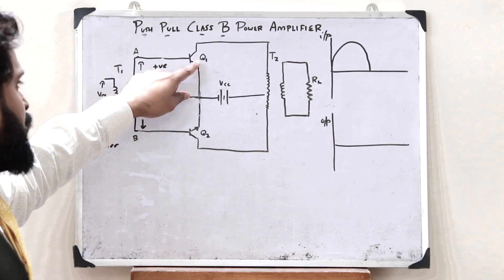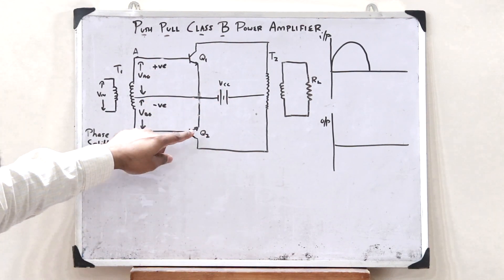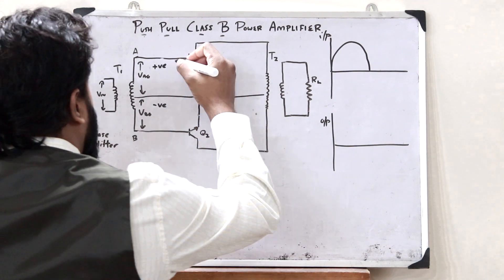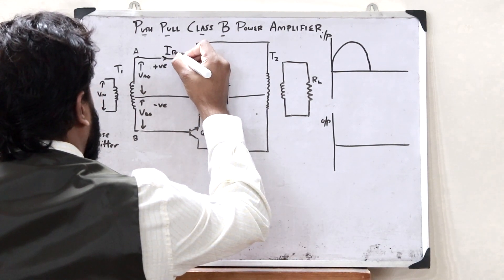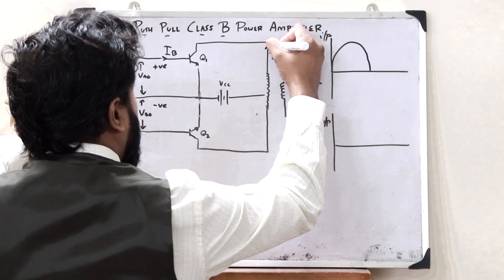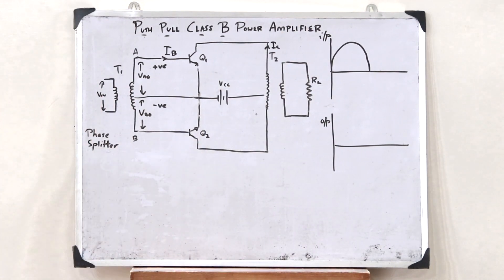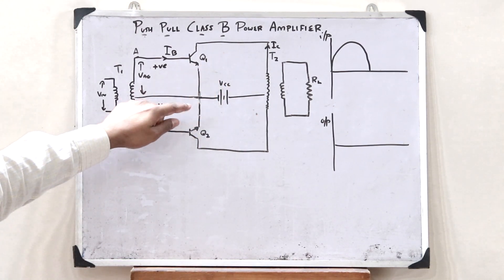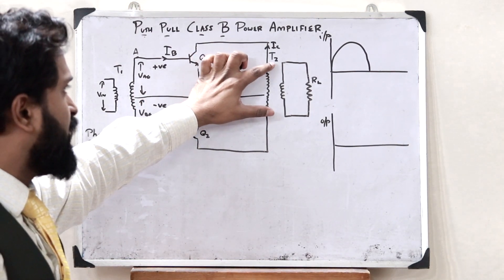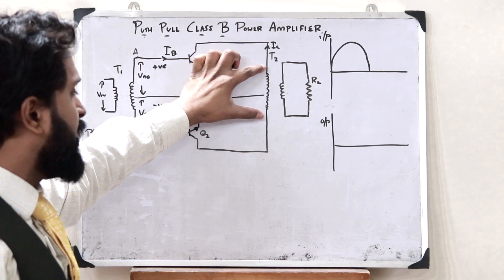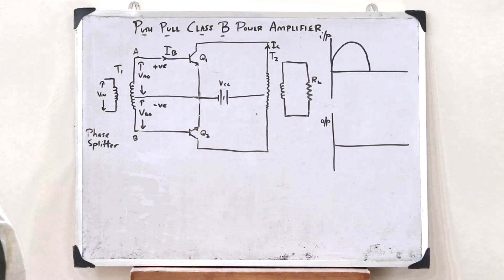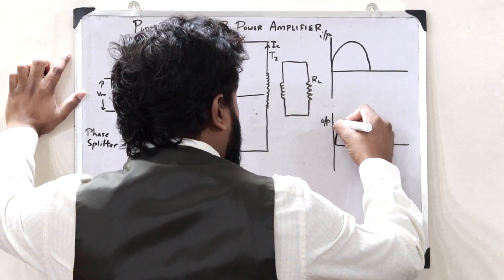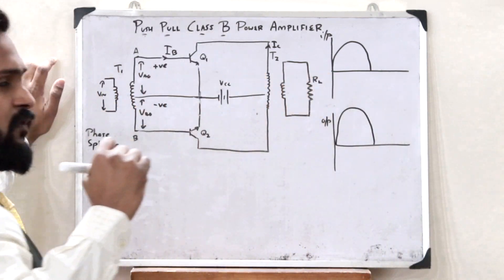Since Q1 is forward biased, it is in the on condition, and since Q2 is reverse biased, it is in the off condition. Therefore, base current IB flows through Q1, and collector current IC also flows. Transformer T2 couples this winding with the load resistor RL, and therefore across the load resistor we get an amplified output.